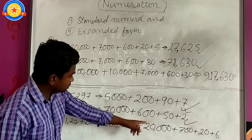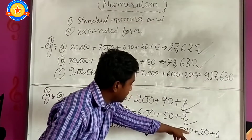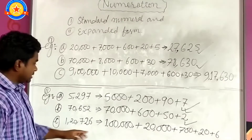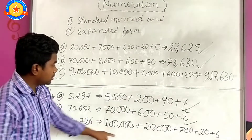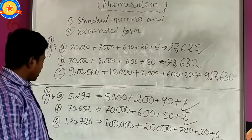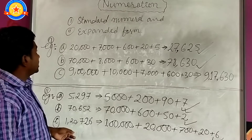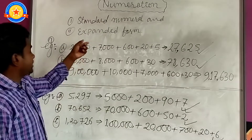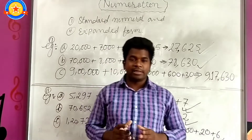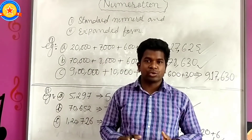So the answer is: 1,000 plus 20,000 plus 700 plus 20 plus 6, giving 1,20,726. This is the example of expanded form. So children, if you have any doubt or any difficulty, please comment below. Thank you.